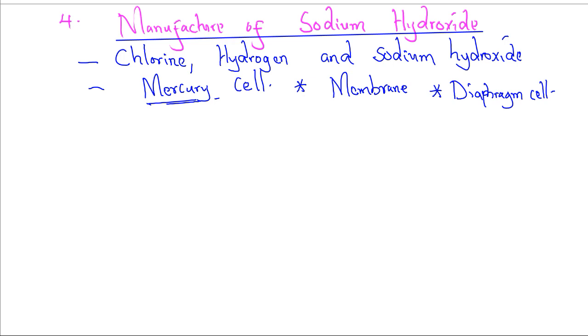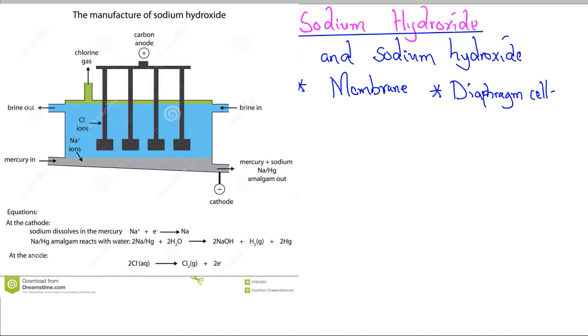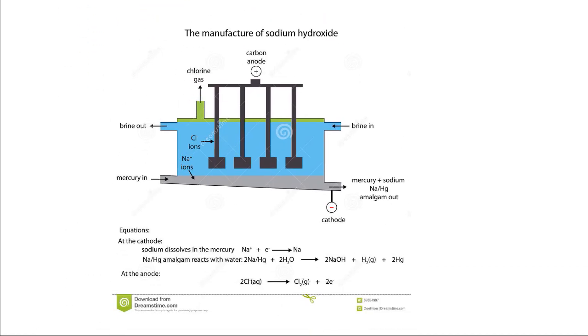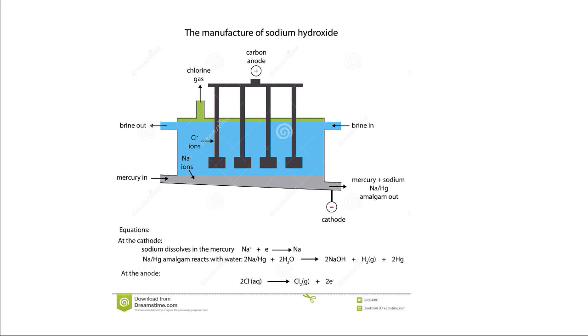When we talk about this industrial manufacture, it is important to know all the possible reactions. This is the setup for the manufacture of sodium hydroxide using the mercury cell.